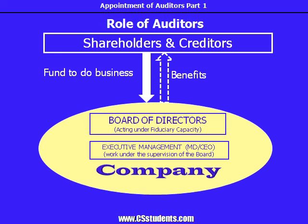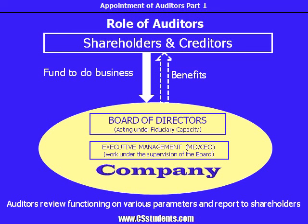Here comes the need of an auditor. The auditor mainly reviews functioning on various parameters and gives their reports. The idea is to have a third party to review the working of the company and independently give a report to the shareholders. The auditor's report is circulated to the shareholders and discussed and adopted by them in the annual general meeting. If auditors make a comment in their report, the board of directors are bound to give their response to that comment.